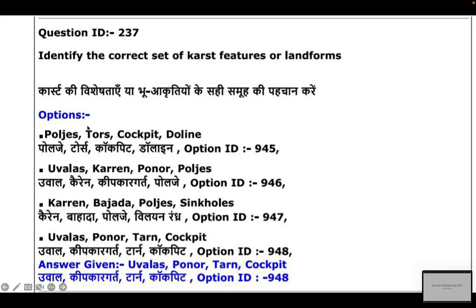The first option is wrong because of Tor only — Cockpit, Dolines, and Poljes all belong to karst, but Tor does not. So the correct option is the second one, which is also the official CSIR answer.